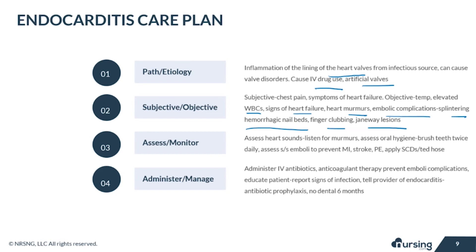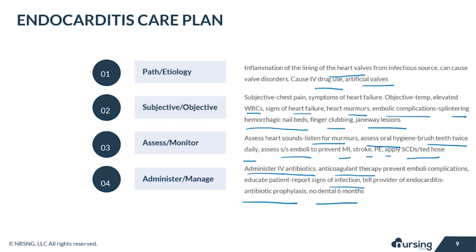Assess the patient's heart sounds, listening for murmurs. Assess their oral hygiene and have them brush their teeth twice daily. Assess for signs and symptoms of emboli to prevent MIs, strokes, and PEs — apply SCDs and TED hose. Administer IV antibiotics and anticoagulant therapy to prevent embolic complications. Educate the patient to report any signs of infection to their provider, tell the provider of their endocarditis history before any procedure as they may need antibiotic prophylaxis, and they should not have any dental procedures for six months.